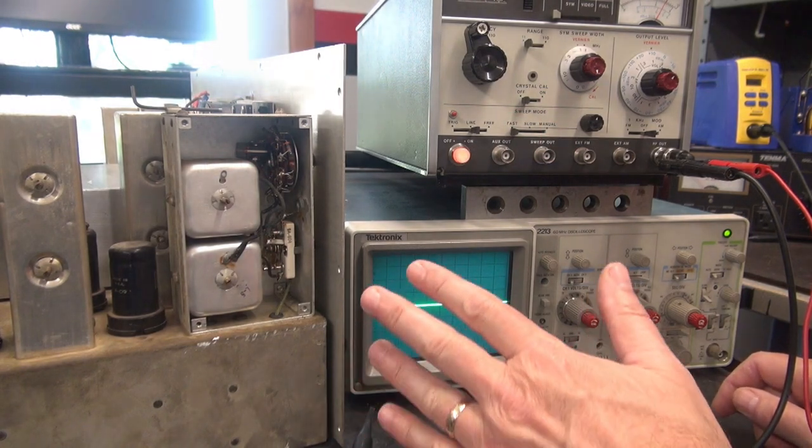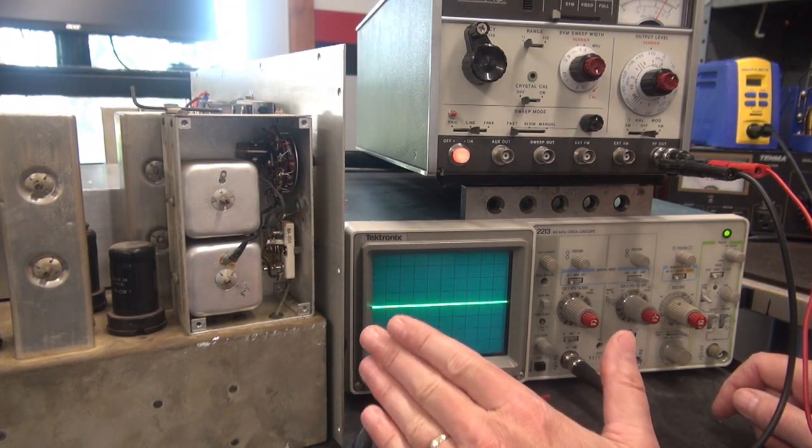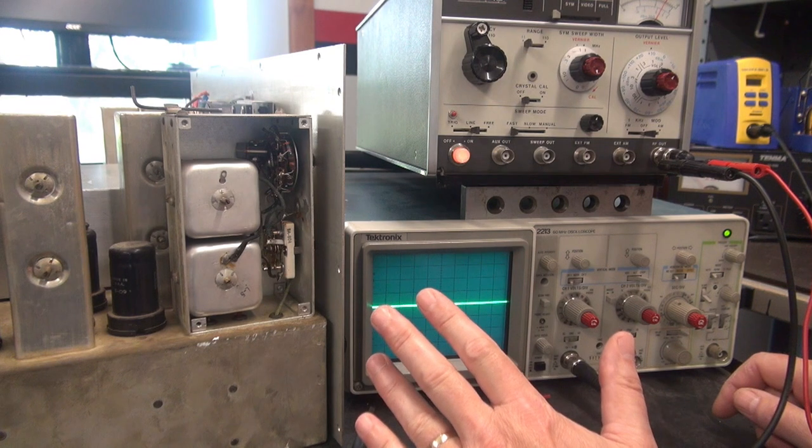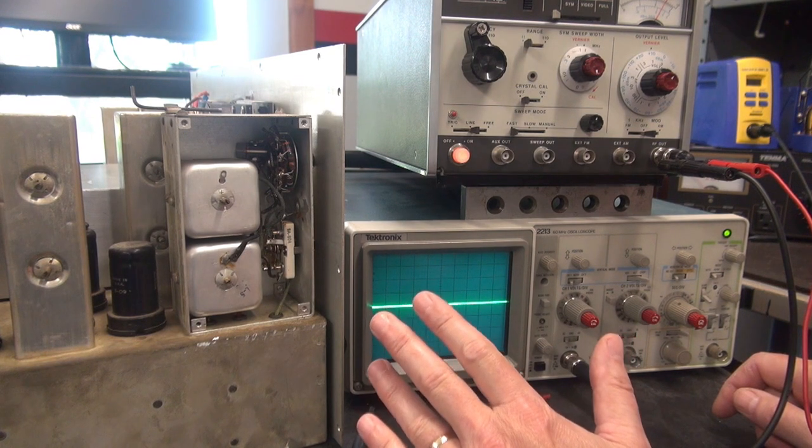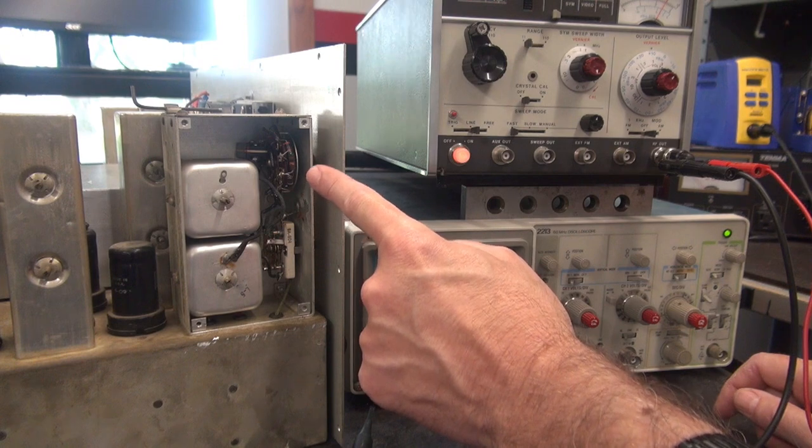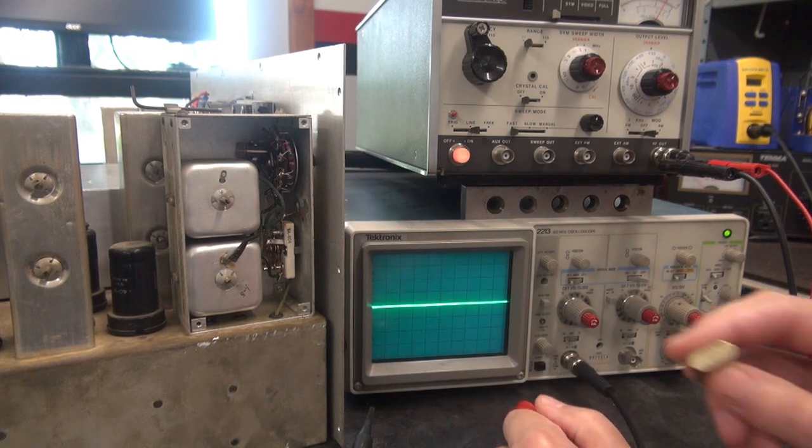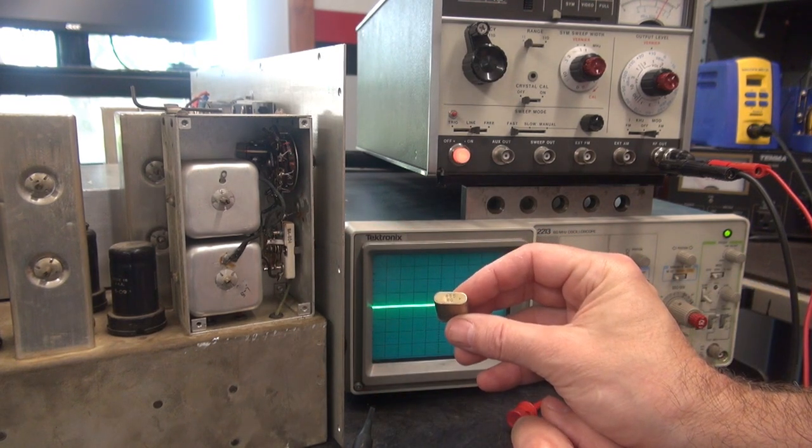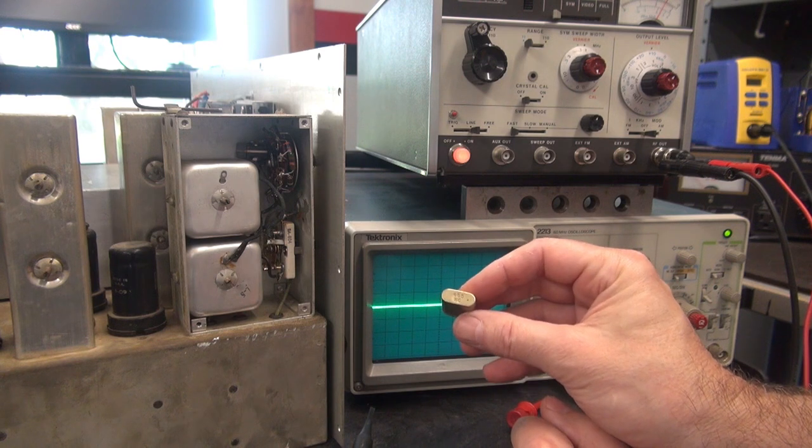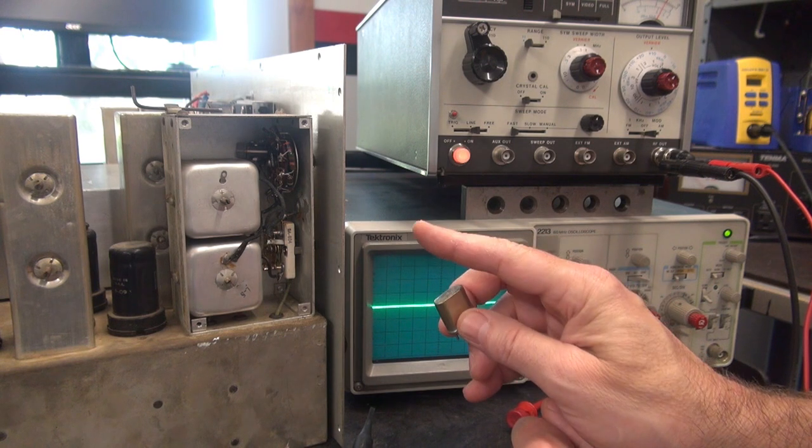All right, here's the task. I have a Hammerlund HQ129X receiver. The crystal selectivity is not working. Within this little compartment is a 455kc crystal, just like this little one you see in my hand. This is also a 455kc, just different case style.